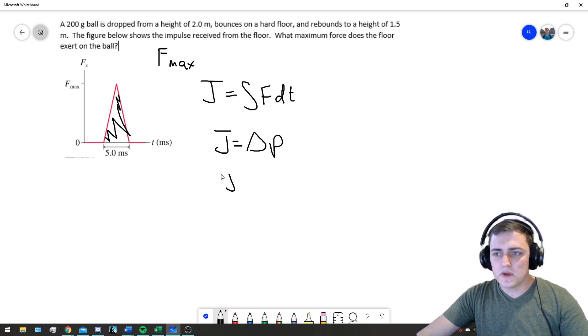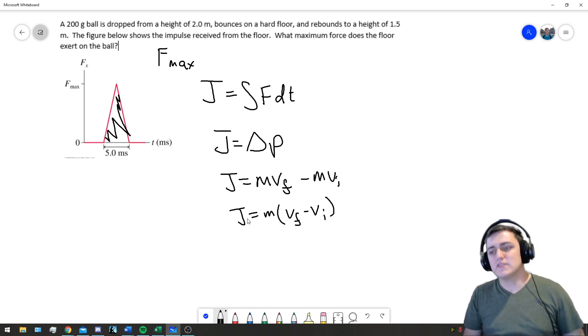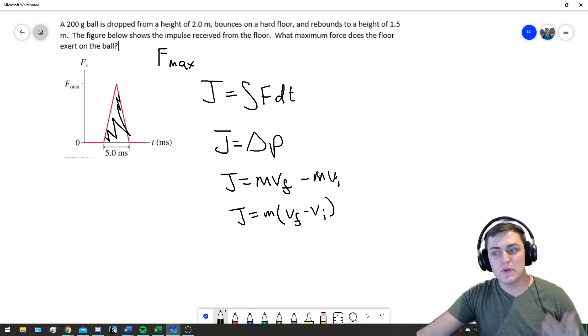But impulse J is also the change in momentum, delta P. So we can say J equals mass times V_final minus mass times V_initial. We can factor that M out of both terms and just say V_final minus V_initial. So our impulse is the change in momentum.